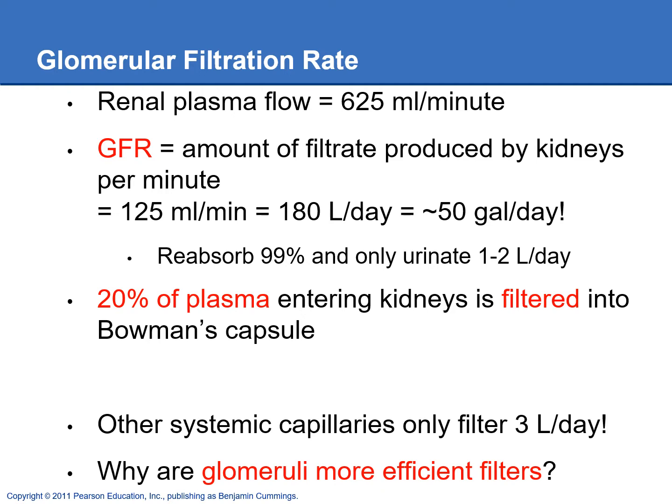Comparing to other systemic capillaries in the body — they're only filtering three liters per day, whereas in the kidneys we're filtering 180 liters per day. So the glomeruli are much more efficient filters than other capillary beds in the body, and there are two reasons for that.